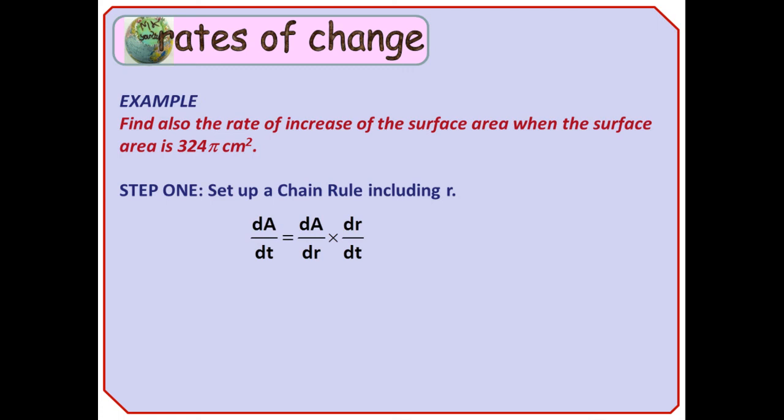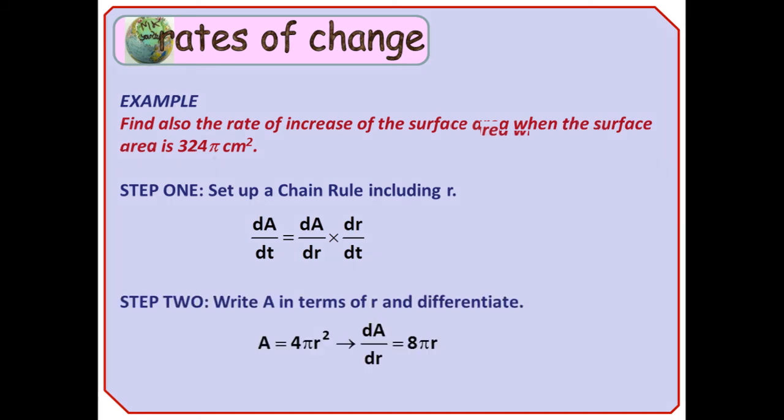Step 1, as before, set up a chain rule including r, so that'll be dA by dt equals dA by dr times dr by dt. Step 2, write A in terms of r and differentiate. The surface area of a sphere is 4 pi r squared, so dA by dr is 8 pi r.